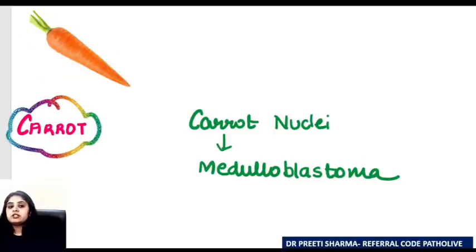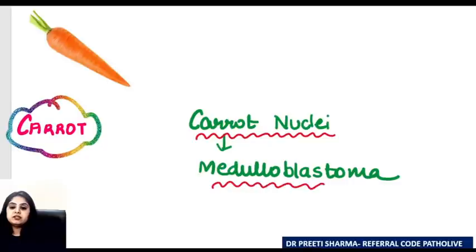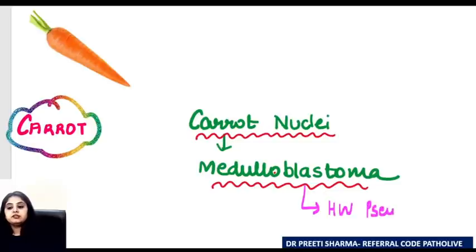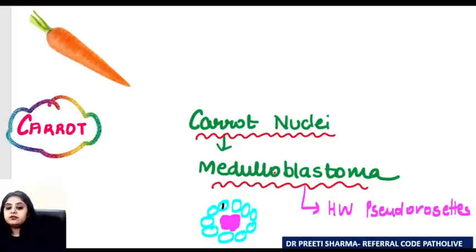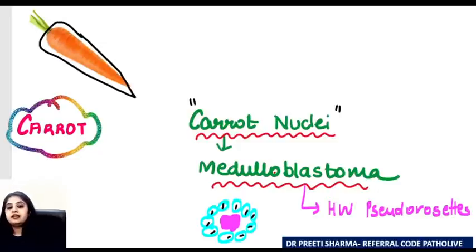An uncommon but INICET-level question: which tumor shows carrot-shaped nuclei? That is medulloblastoma. Medulloblastoma is famous for Homer Wright pseudorosettes — the tumor cells arranged with pinkish material inside. But if you analyze the nuclei of these cells, they tend to be carrot-shaped — slightly elongated, just like the shape of a carrot.